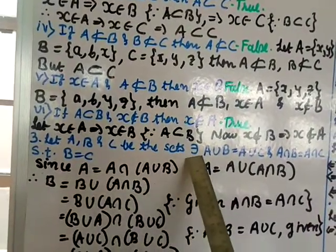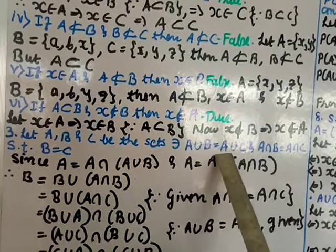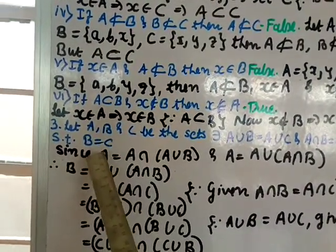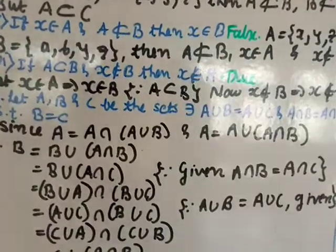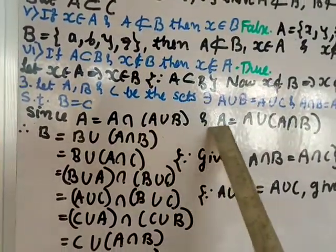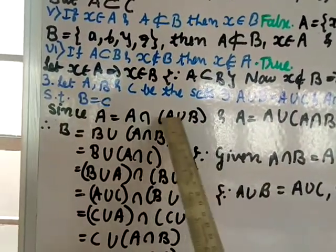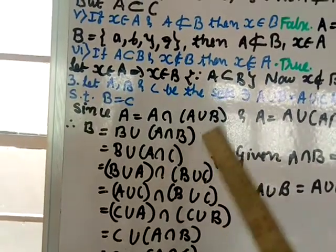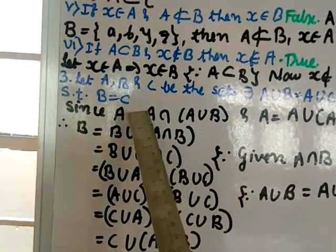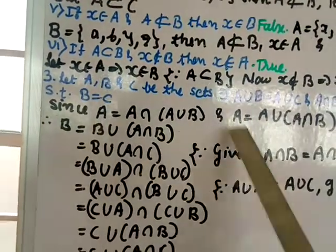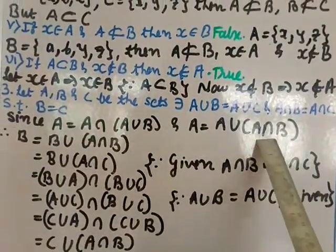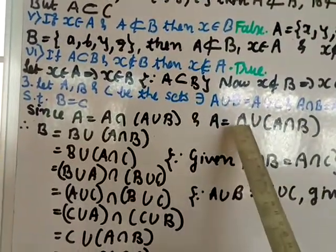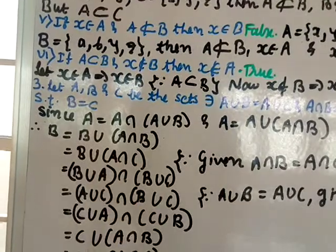Question number three: let A, B, C be sets such that A ∪ B = A ∪ C and A ∩ B = A ∩ C. Show that B = C. We will use the properties: A = A ∩ (A ∪ B) and A = A ∪ (A ∩ B). Here A ∪ B gives all elements of A and B; intersecting with A gives back A. Similarly A ∩ B gives common elements, and unioning with A gives back A.